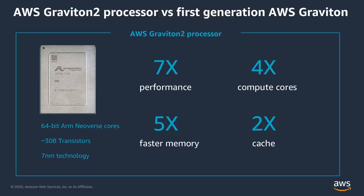When we announced the original Graviton back in 2018, we were already at work on Graviton 2. It delivers a 7x overall performance improvement over the V1 part, a 4x increase in core count, twice the cache, and 5x the memory performance.